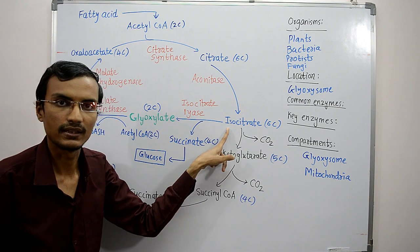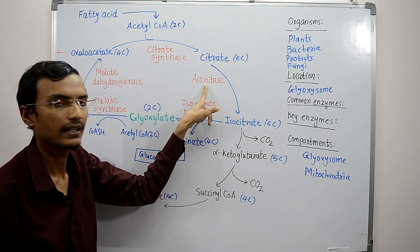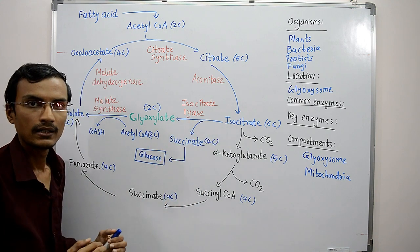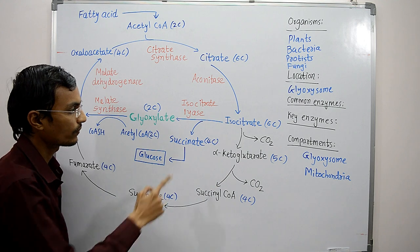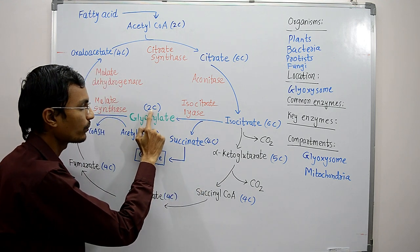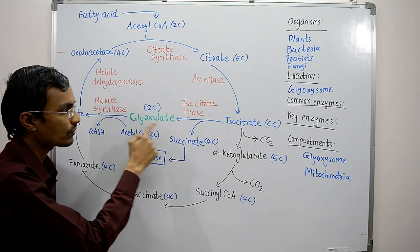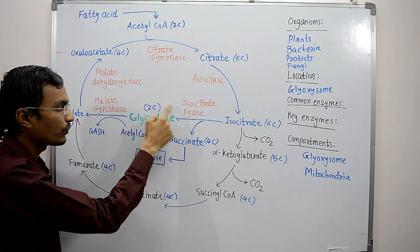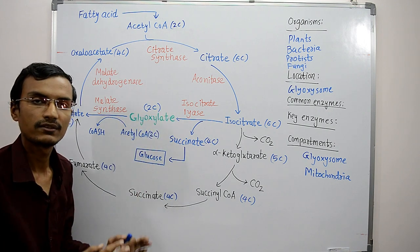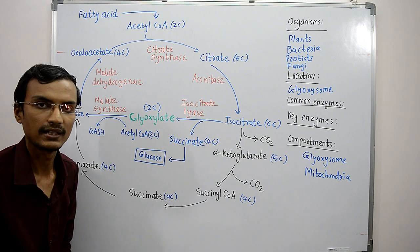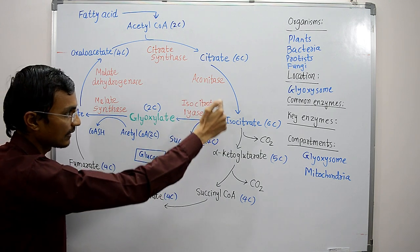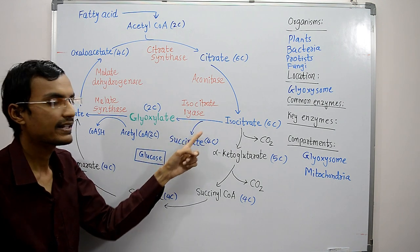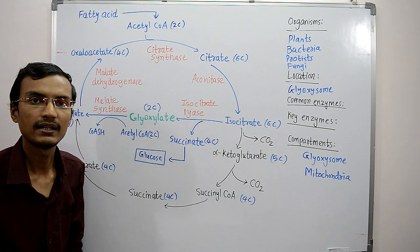Citrate is then converted to isocitrate by the enzyme aconitase. Isocitrate is then cleaved into two molecules: a four-carbon succinate and a two-carbon glyoxylate. This is a bypass reaction catalyzed by the key enzyme of the glyoxylate cycle — isocitrate lyase. The two-carbon glyoxylate produced here is why this cycle is called the glyoxylate cycle.